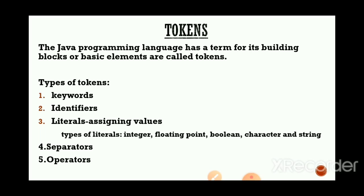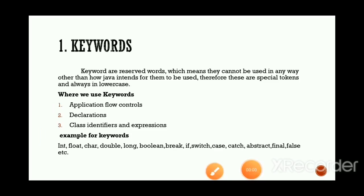Now we will start one by one. The first token type is keywords. Keywords are reserved words, which means they cannot be used in any way other than how Java intends for them to be used. Therefore these are special tokens and always in lowercase.